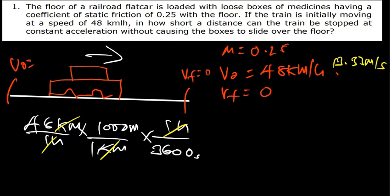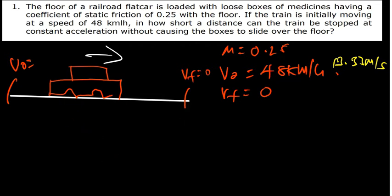Now we want to find the acceleration and the distance. The only force acting on this object is the friction force, which opposes the motion. Since the car was decelerating, the friction force is negative. Therefore the summation of forces in the x-direction gives us only the friction force, which is negative since it opposes motion, meaning the acceleration is going to be negative.